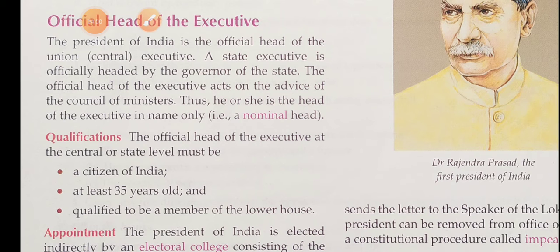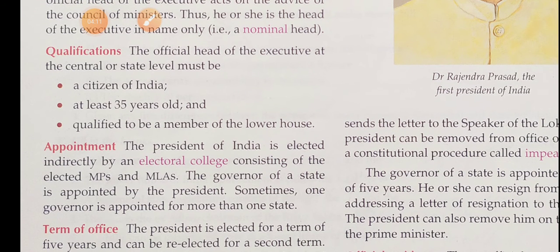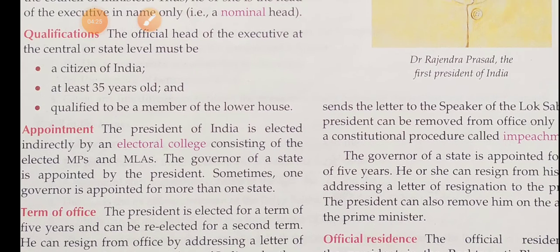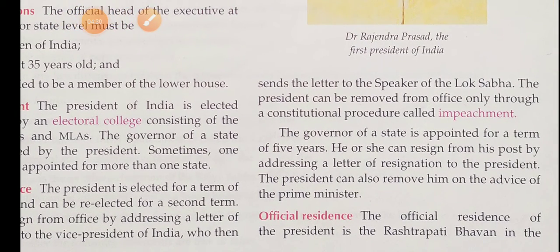The qualification: he should be an Indian citizen, at least 35 years old, and a qualified member of the lower house. The President of India is elected by the Electoral College consisting of the MPs and MLAs. The Governor is appointed by the President. The President is elected for a term of 5 years, and the Governor is also appointed for a term of 5 years.